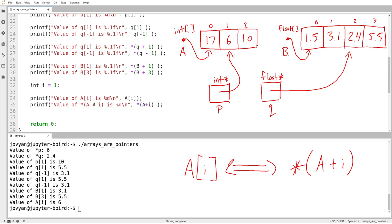Okay, so the value of star of A plus i is whatever. So we'll try printing that out. We'll make sure we're still on the same page here. Okay, still 6.